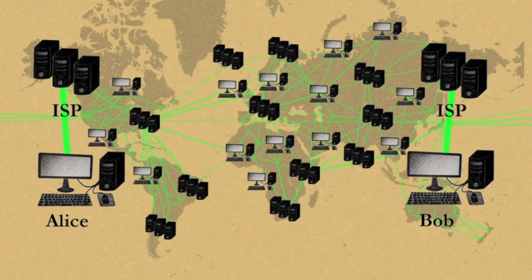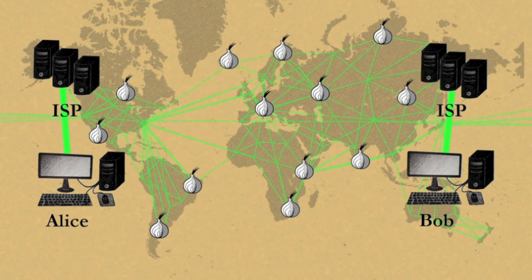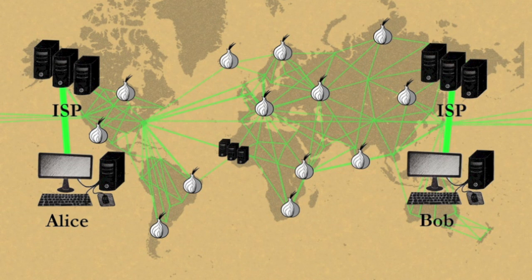Tor bounces your traffic through three out of thousands of volunteer relays in over 80 countries, separating the origin and destination of your communications. No one relay gets the whole picture of your path through the network, so Tor doesn't collect user information.